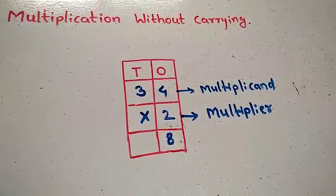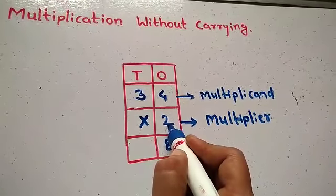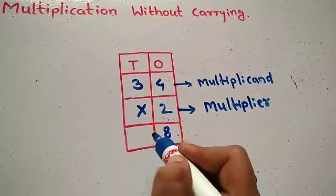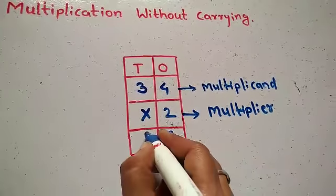Now, 2 into 3. 2 ones are 2, 2 twos are 4, 2 threes are 6. So we will write over here 6.